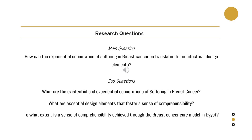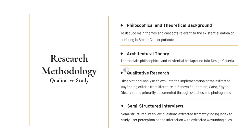The main research question was how can the experiential connotation of suffering in breast cancer be translated into architectural design elements? Sub-questions included: what are the existential and experiential connotations of suffering in breast cancer? What are essential design elements that foster a sense of comprehensibility? And to what extent is a sense of comprehensibility achieved through the breast cancer care model in Egypt? The research methodology comprised four steps: a philosophical and theoretical background, translation into architectural theory and design criteria, then qualitative research through observational analysis and semi-structured interviews evaluating sense of comprehensibility at Mahaya Foundation in Cairo, Egypt.